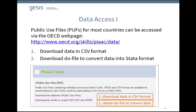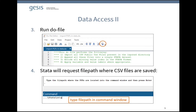This do file will import and append all public use files into a unique Stata dataset ready to be used. In the third step, you need to run the do file by clicking on the Execute or Do button in the upper left part of your Stata do file editor. While running, Stata will request the file path where you saved all CSV files, and you can just type the path in the command window and click Enter.